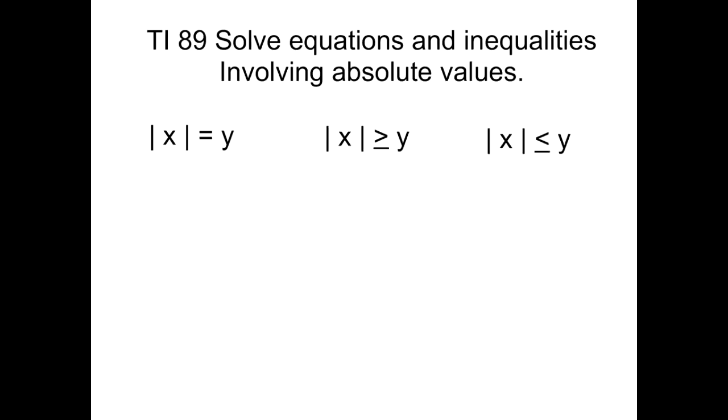Let's take a look at the first one. First we'll do it by hand and then later we'll do it in the calculator. For this example we're going to do 4 plus 5 times the absolute value of x plus 1 equals 19.